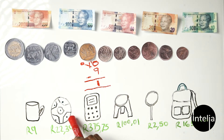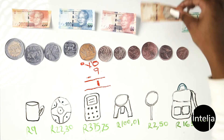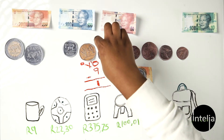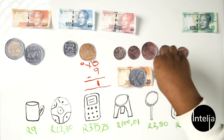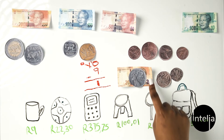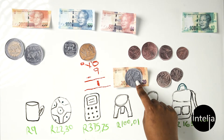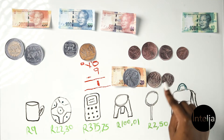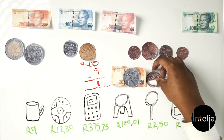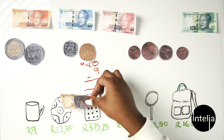Now let's move on to the next object. You have a soccer ball, and the price of the soccer ball is 22 rand 30. You need a 20 rand note, a 2 rand coin, a 20 cent coin, and a 10 cent coin. 20 rand plus 2 rand is 22 rand, and then you have 30 cents — so 22 rand 30. That's the amount you'd give for the soccer ball.